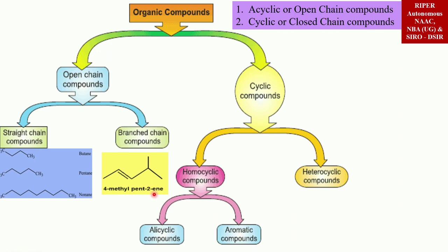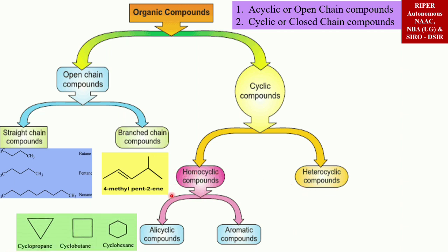Coming to cyclic compounds, these are further categorized into two types: homocyclic compounds and heterocyclic compounds. Homocyclic compounds are also of two types: alicyclic compounds and aromatic compounds. Alicyclic compounds contain one or more all-carbon rings which may be either saturated or unsaturated but do not have the aromatic character. Examples: cyclopropane, cyclohexane.